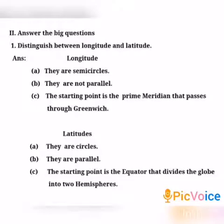Next — Latitudes: A) They are circles. B) They are parallel. C) The starting point is the equator, which divides the globe into two hemispheres. Longitudes: A) They are semi-circles. B) They are not parallel. C) The starting point is the prime meridian that passes through Greenwich.